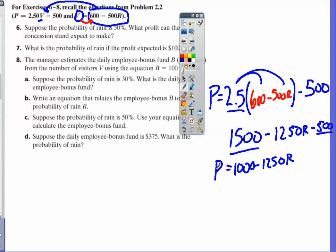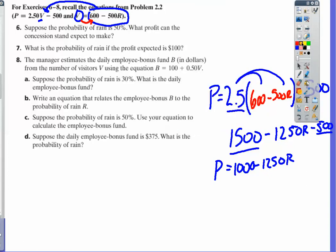Now we have a linear equation we can use to solve the problem that was originally asked. Problem 6 asks, what is the profit if we have a probability of 50% rain?